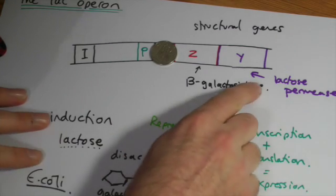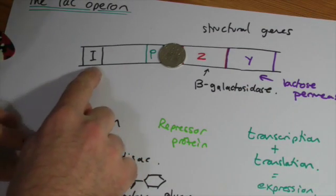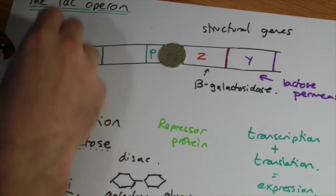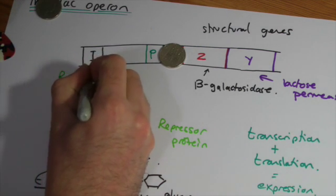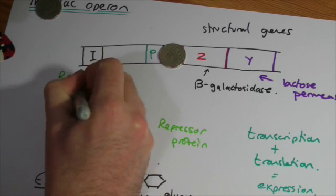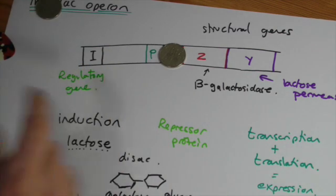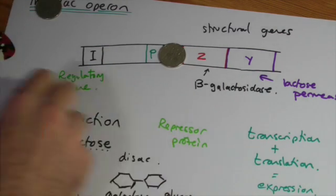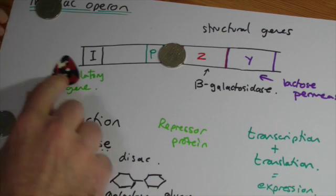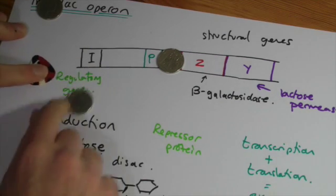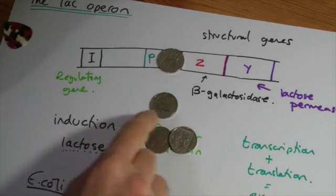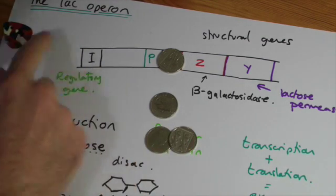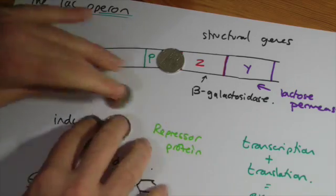Where does this repressor protein come from? Well, it comes from further back here, and this is the I region, also known as the regulatory gene, and all this is doing is making the repressor protein. So this will be constantly, there'll be another RNA molecule reading this off. This just stays switched on all the time, nothing happens to this, it just keeps doing its job.